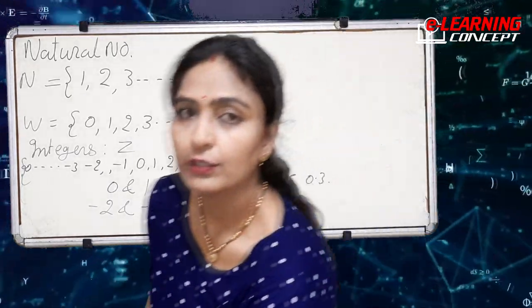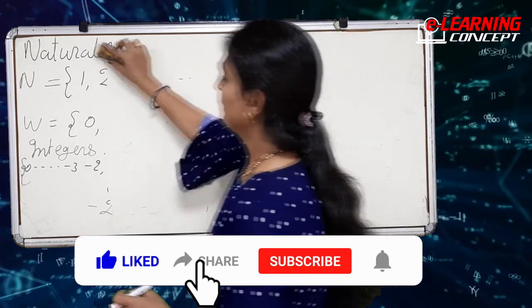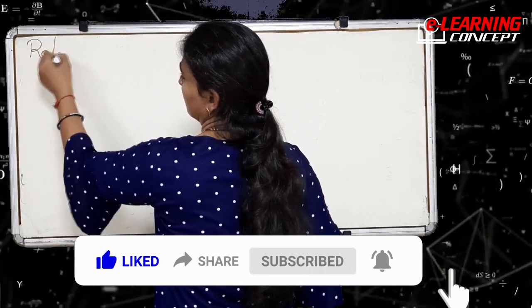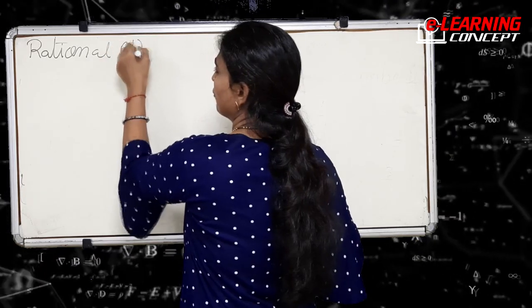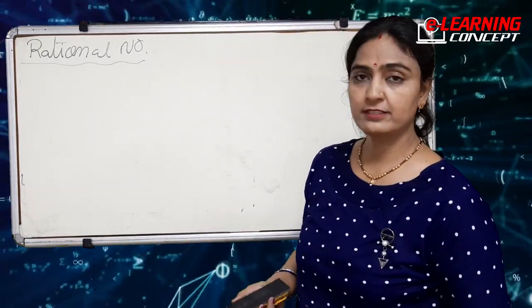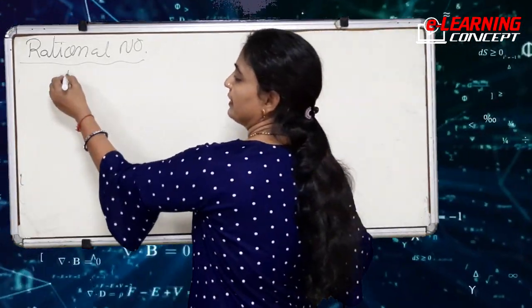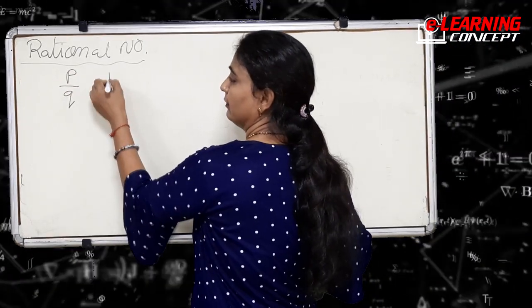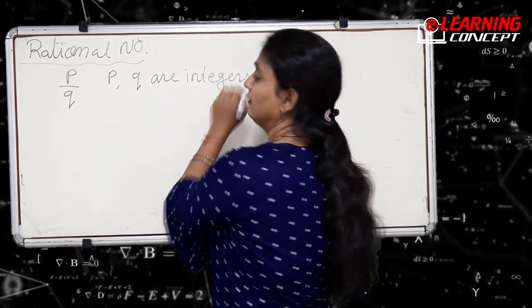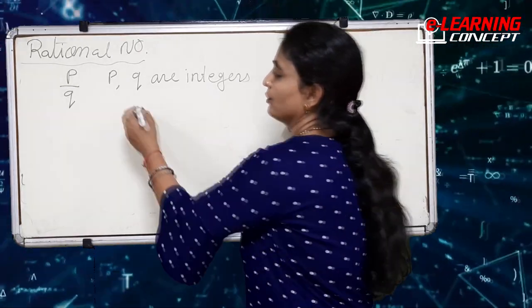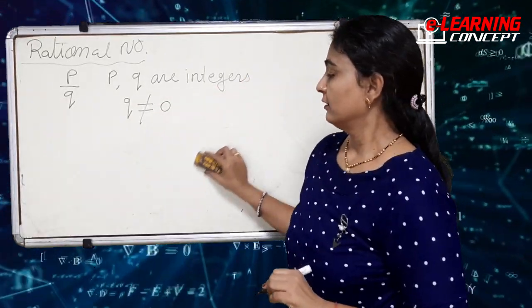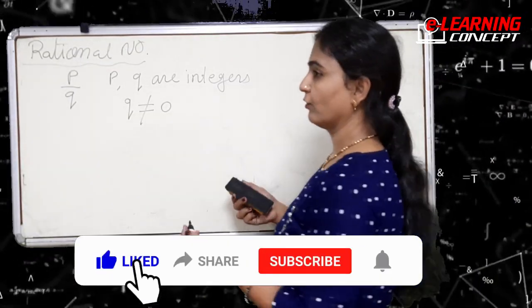We can even include decimal numbers like 0.5, 0.3, etc. So we get a new set of numbers which is called rational numbers. Rational numbers are those numbers which can be written in the form of p by q, where p and q are integers, and another condition is that q is not equal to zero.